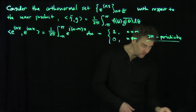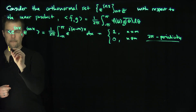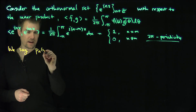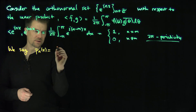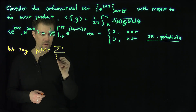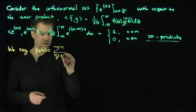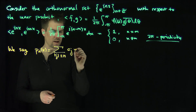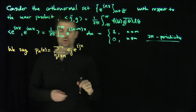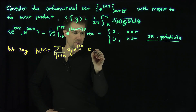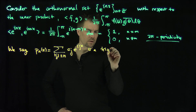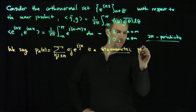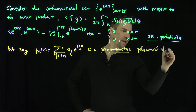Now I'm going to define trigonometric polynomials. We say p_n of x, which is the sum over j with absolute value less than or equal to n, of some numbers c_j times e to the i j x, is a trigonometric polynomial of degree n.